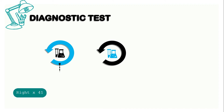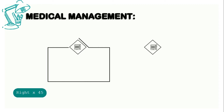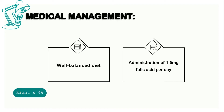For diagnostic tests, there should be a blood test, Schilling test, and intrinsic factor antibody test. For medical management, folate deficiency is treated by increasing the amount of folic acid in the diet and administering 1 mg of folic acid daily. Folic acid is given intramuscularly only to people with malabsorption problems. Patients who abuse alcohol should receive folic acid as long as they continue to consume alcohol.